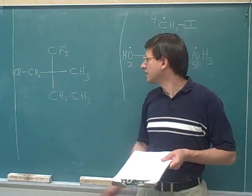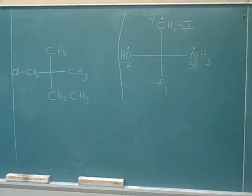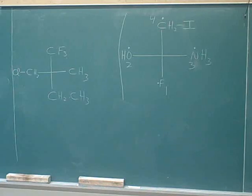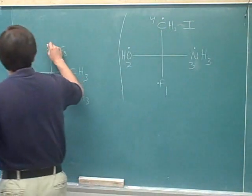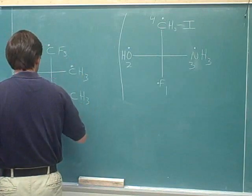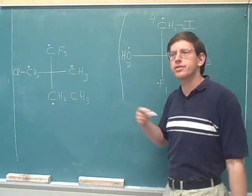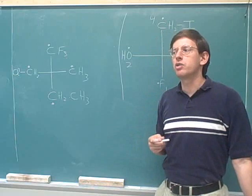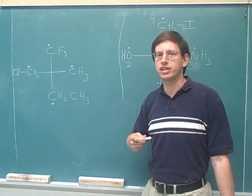Let's try assigning priorities with this stereocenter. First, we focus on the atoms that are directly connected to the stereocenter. So I'll mark those with dots. But those atoms are all carbons. All the directly attached atoms are carbons. So now we're forced to go further out and see what those atoms are attached to.